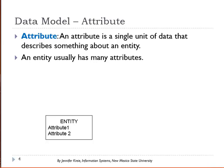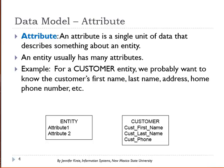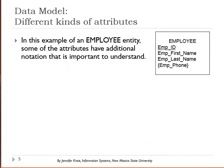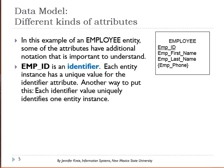These are things that describe a specific entity instance or occurrence of a specific customer. An entity usually has many attributes. In our example we have the generic entity with attribute one and two, and also a specific example of customer with three attributes. In the employee entity example, attributes are added that describe the employee, such as employee ID.